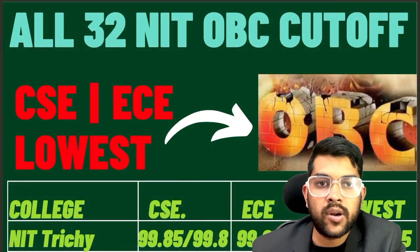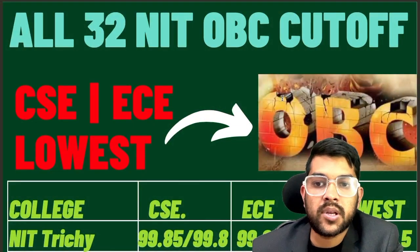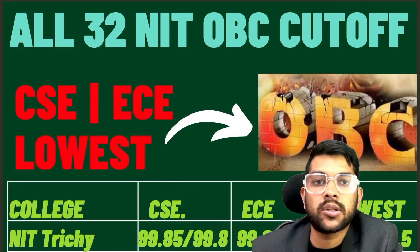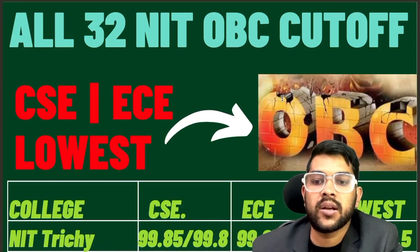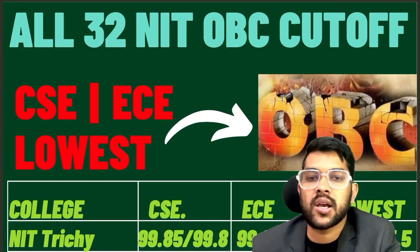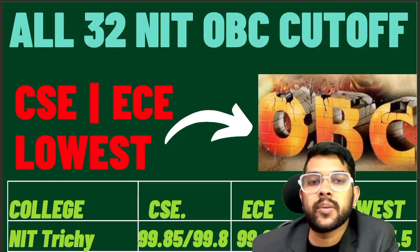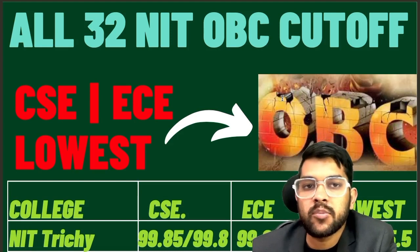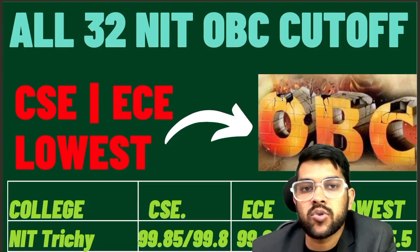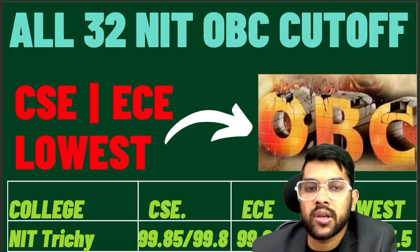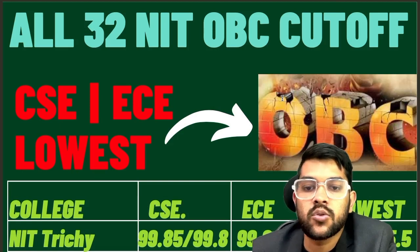This is Amit, and here I will provide you complete information regarding the OBC category — that is, all 32 NIT OBC cutoff percentiles. That is the minimum percentile you need to have to get CSE, EC, and lower branches. In the same college, if you want to get in with any type of branch — if you just want to enter any NIT — then how much percentile you need to get.